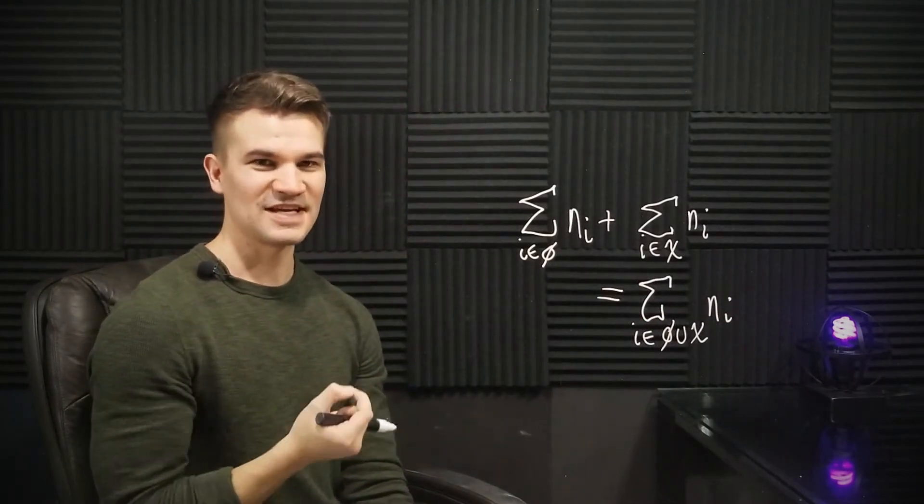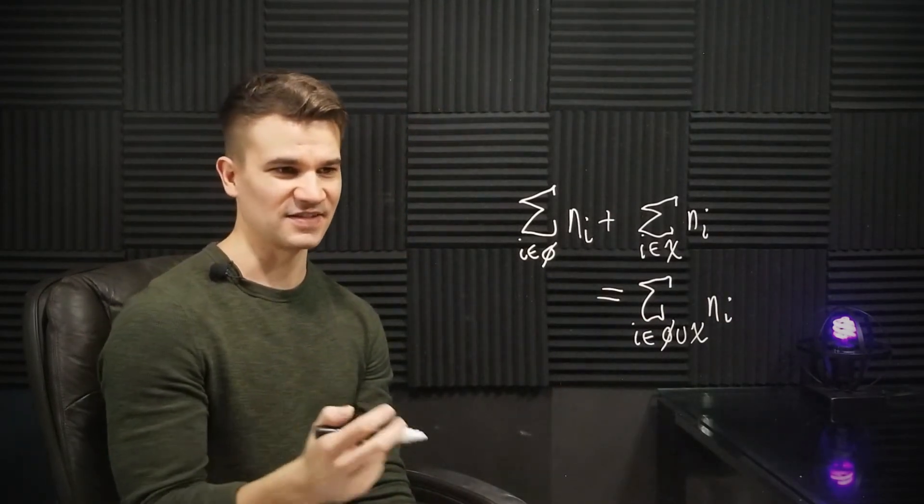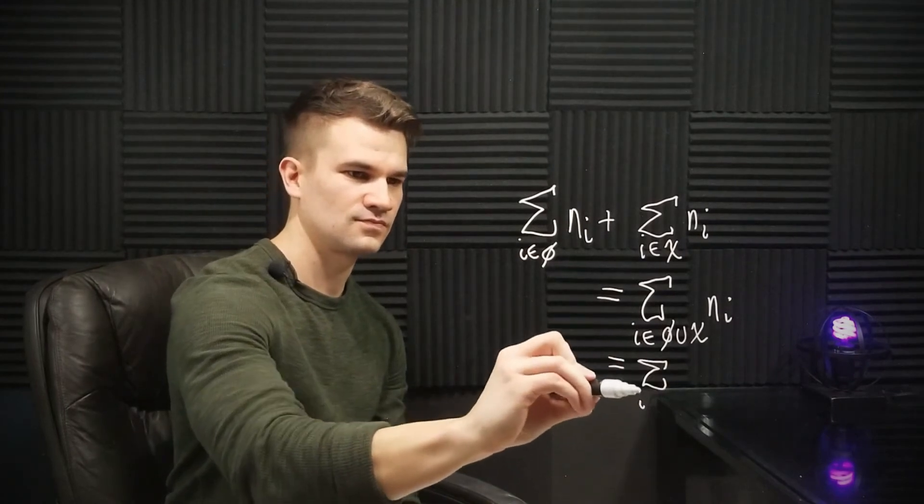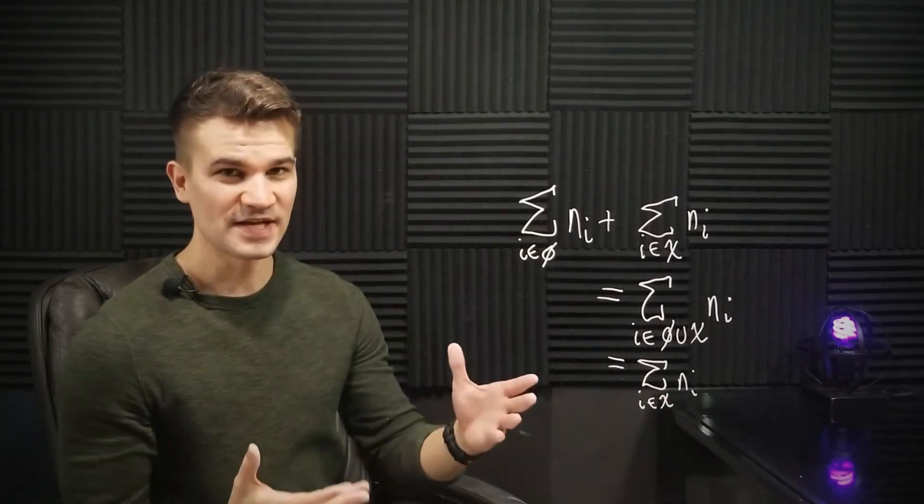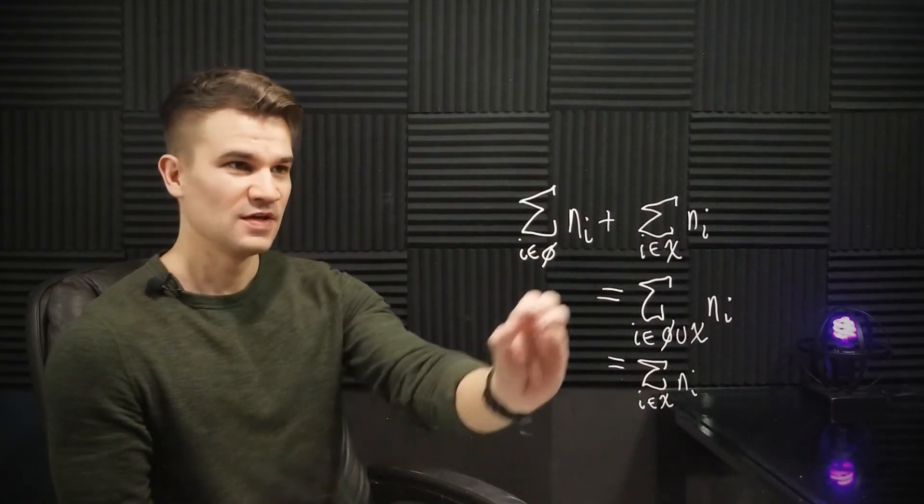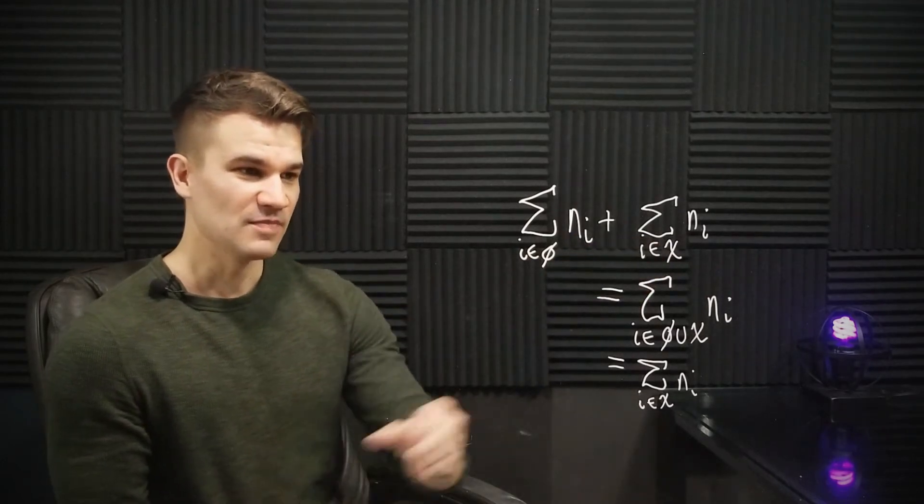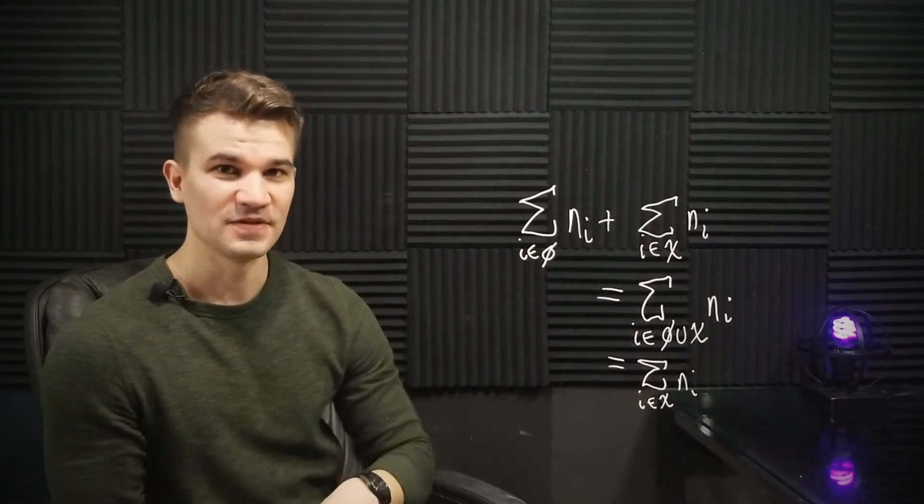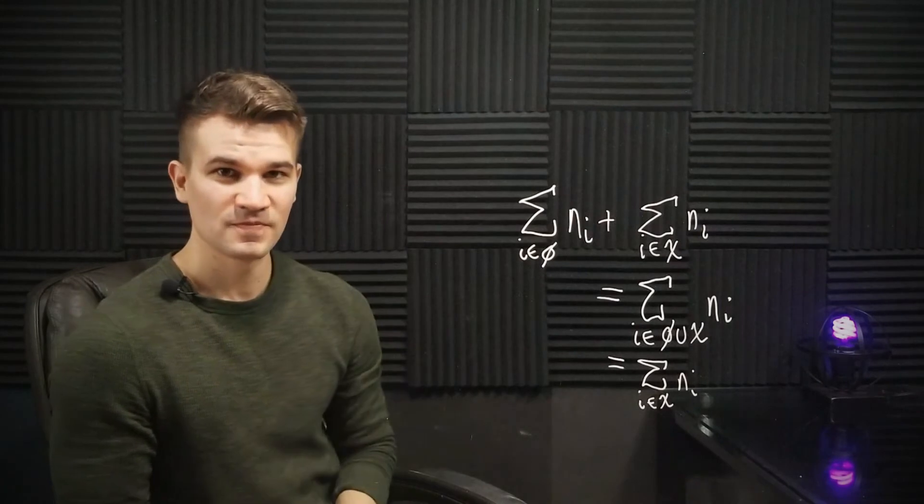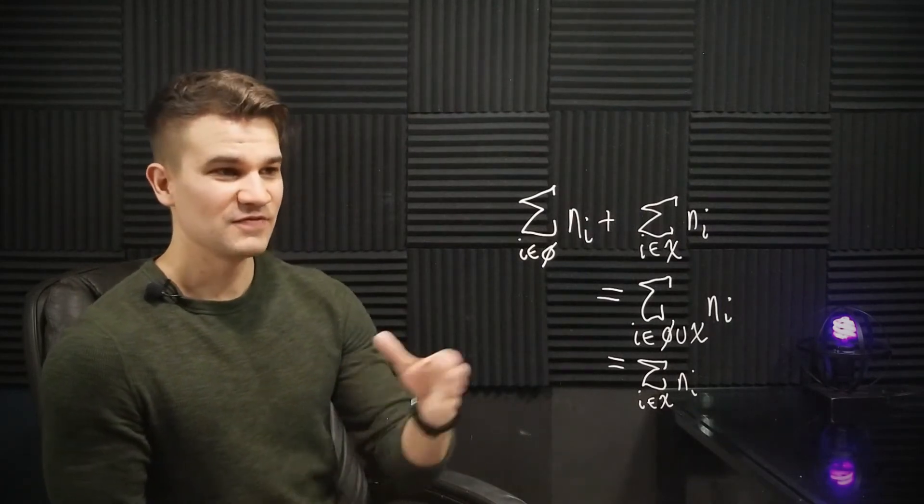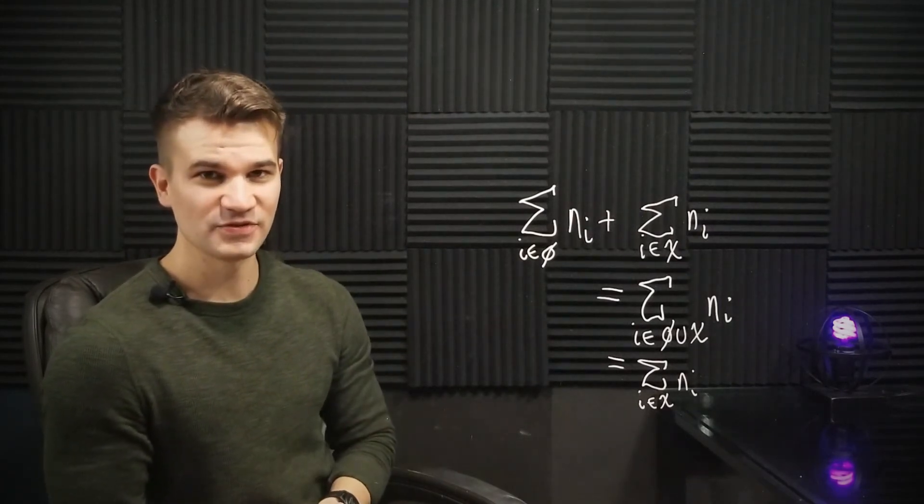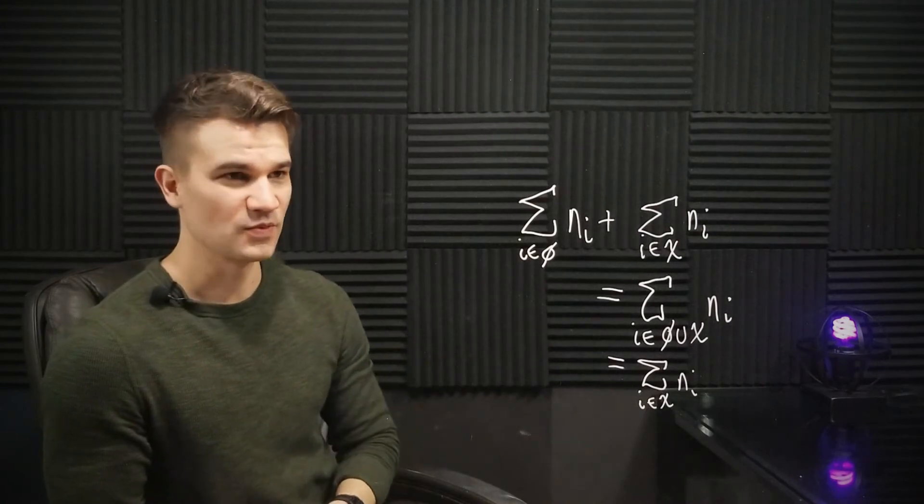But the empty set union with X is just X again. So in the end, we have that when we add the empty sum to some other sum, it must be the same thing as that other sum. That makes the empty sum zero. And even though addition is the specific example I used here, the argument's the same no matter what the operation is.